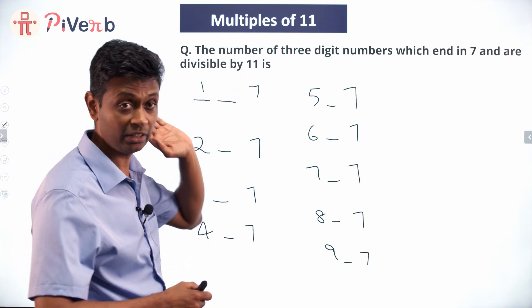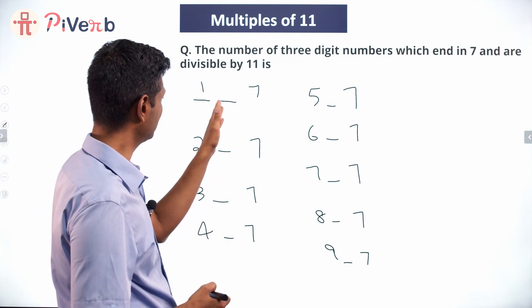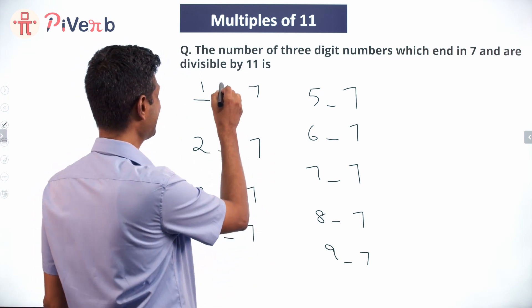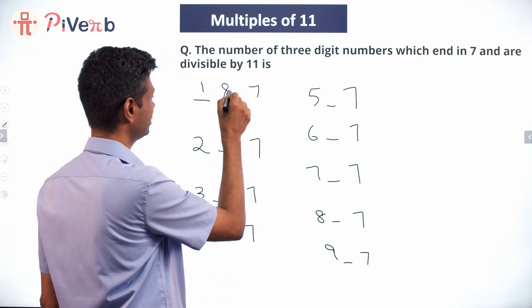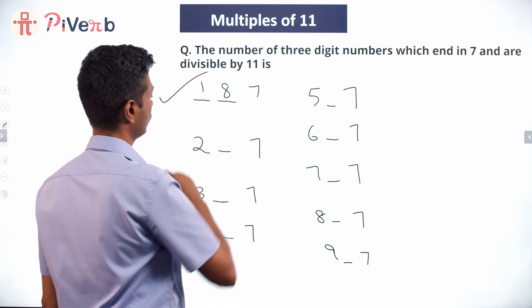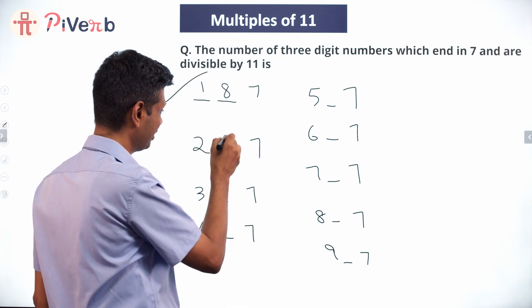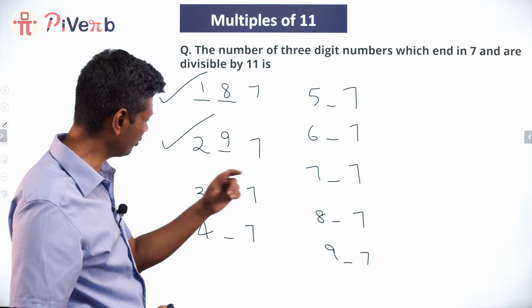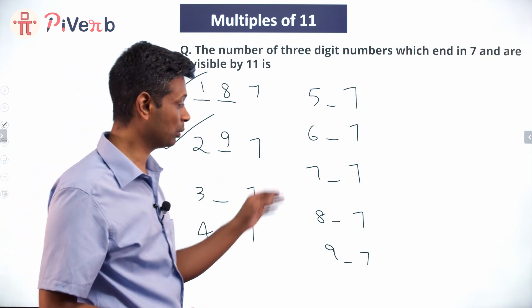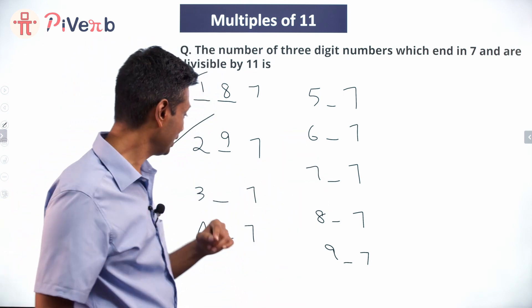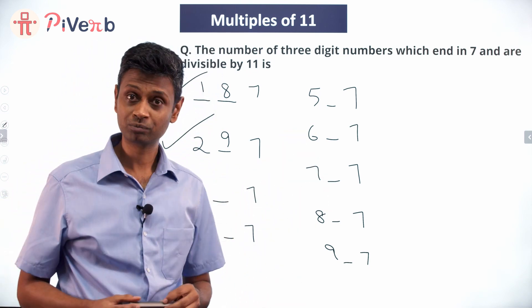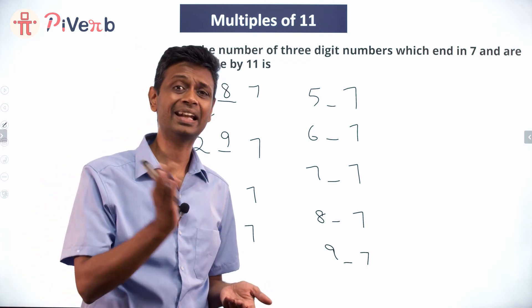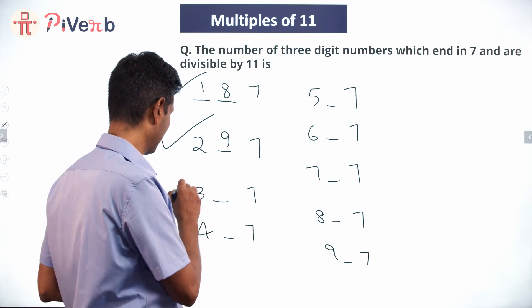1 dash 7: 1 plus 7 is 8. Put some middle number here, subtract 8 to go to 0. This will work. 2 plus 7 is 9, 297 will work. 3 plus 7 is 10. Initially I thought everything will work, but funnily enough, 3 plus 7 is 10. I cannot subtract 10 and take it to 0. I cannot subtract something and generate 11. 3 dash 7 nothing works.